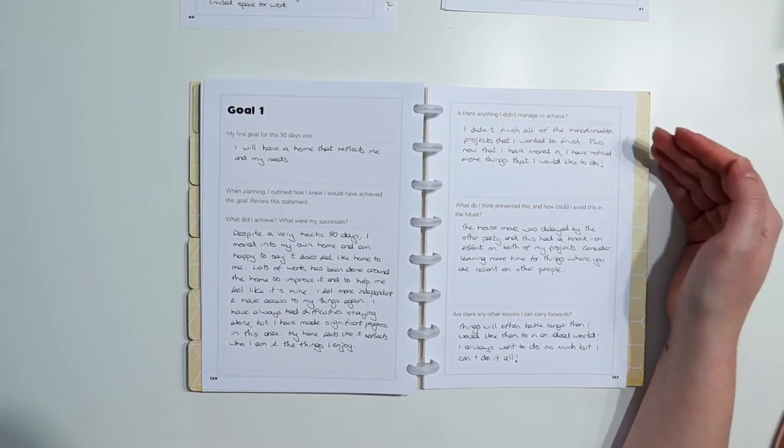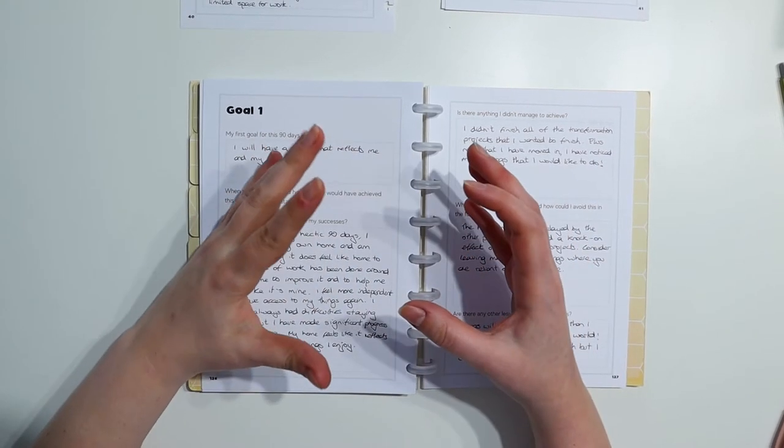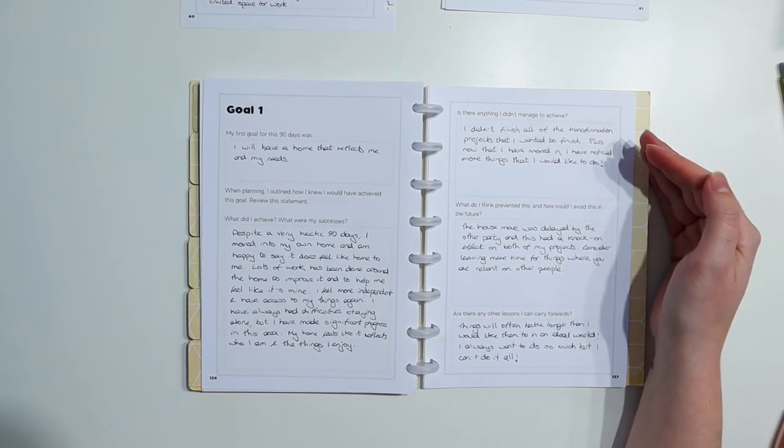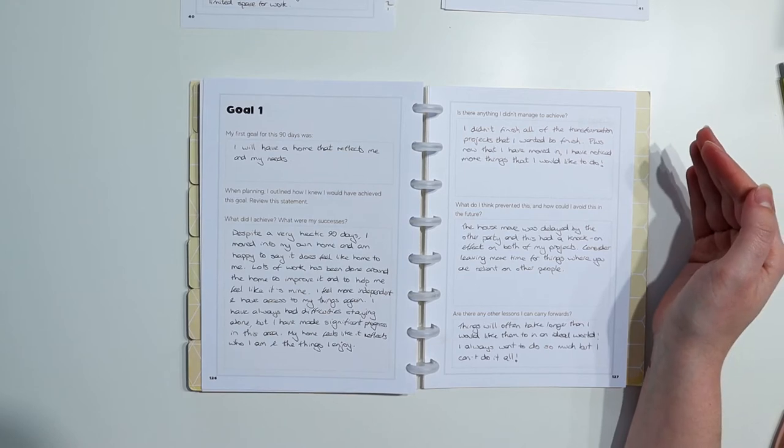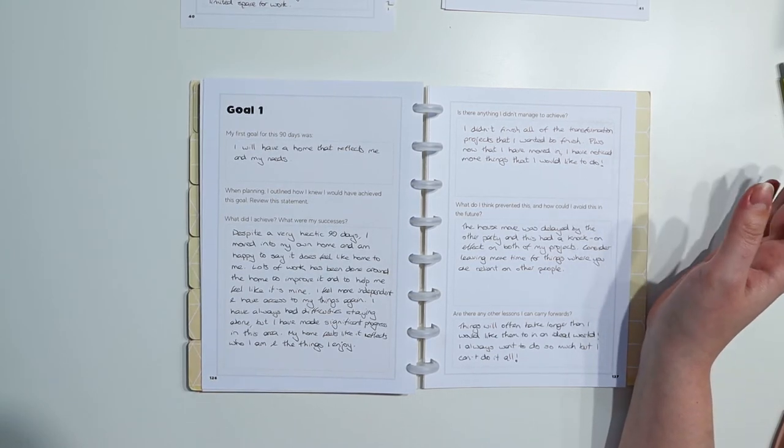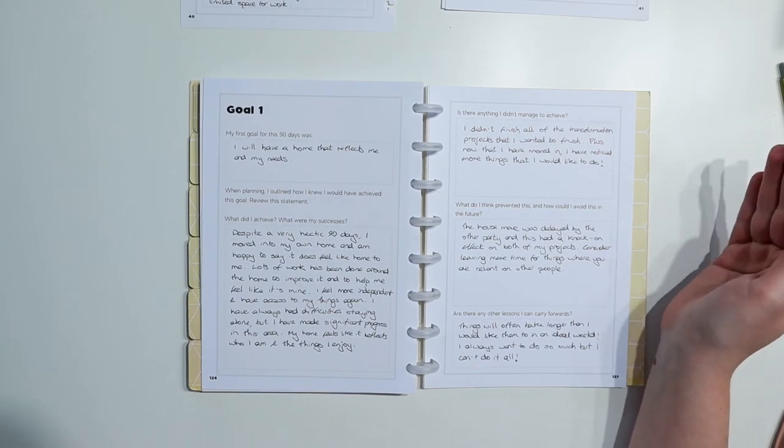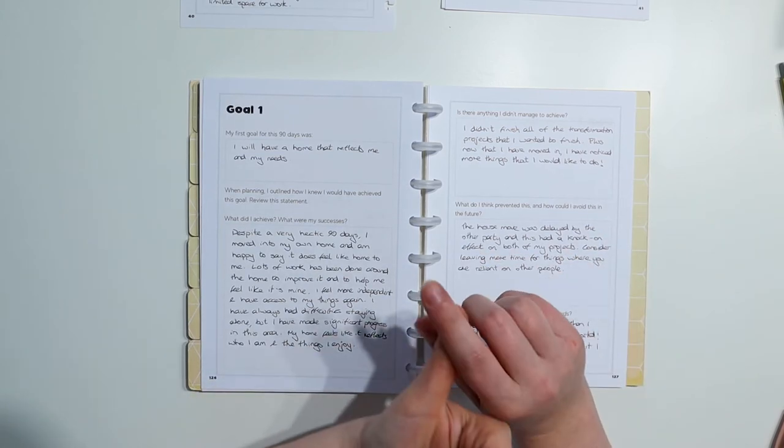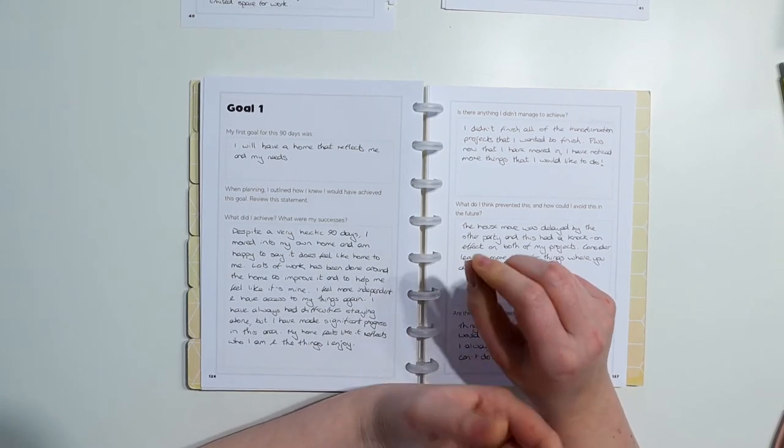So is there anything I didn't manage to achieve? I said I didn't finish all of the transformation projects that I wanted to finish. So my goal was split into two projects. The first one was about moving home and the second one was about transforming it into a space that reflected me and my needs. So I didn't quite finish all of the transformation projects I wanted to finish. Plus, now that I've moved in, I've noticed more things that I would like to do. So obviously, having not seen the property for a while, and I think it's always the same when you move in and you see it empty and things aren't hidden by furniture, you always notice those things.